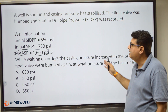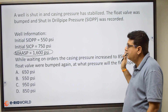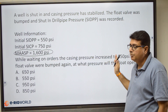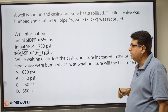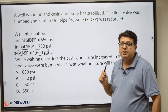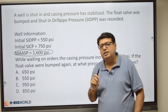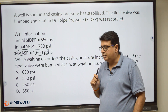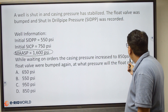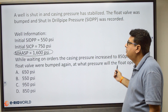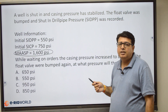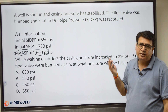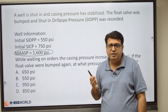While waiting, there's an increase in casing pressure from 750 to 850 psi, so casing pressure has increased by 100 psi. If the float is bumped open again, what pressure are you going to see on the drill pipe gauge?